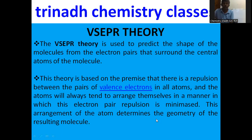The central atom in the molecule is surrounded by some electron pairs, and these electron pairs are useful for predicting the shape of the molecule. This theory utilizes the electron pairs surrounding the central atom to predict the shape of the molecule. The main important point is that this theory is completely based on the repulsion between the pairs of valence electrons in all atoms. Every atom tries to minimize these repulsions by arranging these electron pairs accordingly, and this arrangement gives a particular geometry to the resulting molecule.